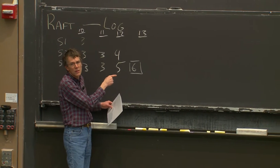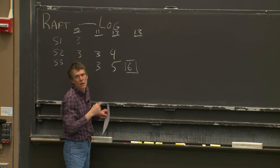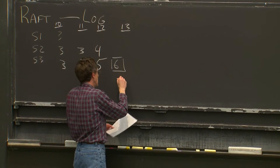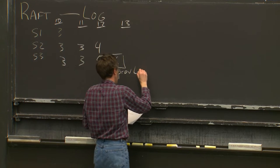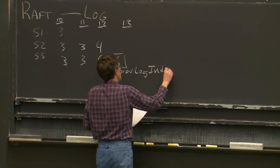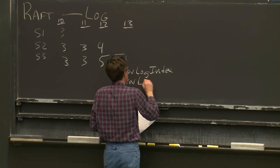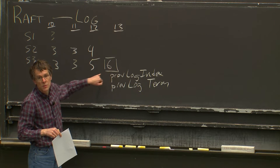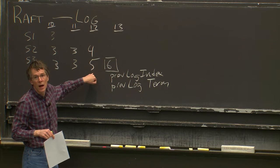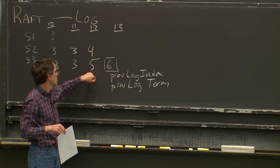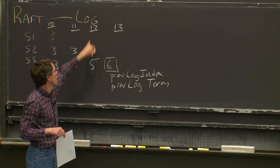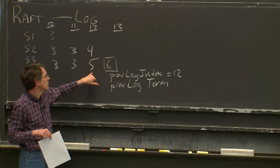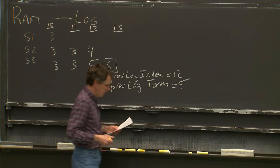The rules in figure 2 say that an AppendEntries RPC, as well as the command the client sent to the leader to replicate on the followers' logs, also contains a previous log index field and a previous log term field. When sending out an AppendEntry for the first entry, the leader puts information about the previous slot — the slot before the new information. In this case, the previous log index is 12 and the term of that entry in the leader's log is 5.